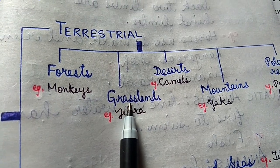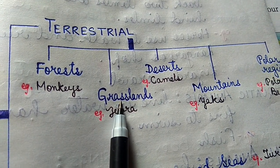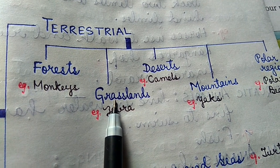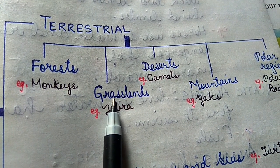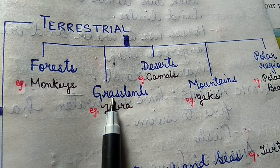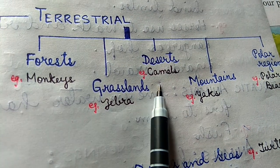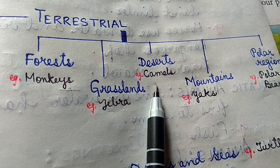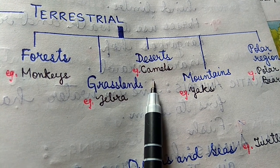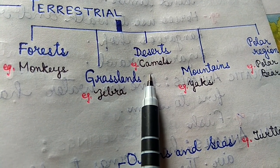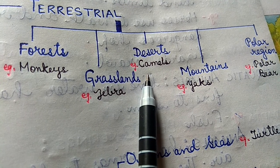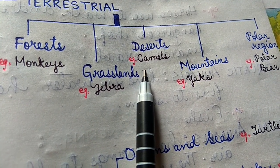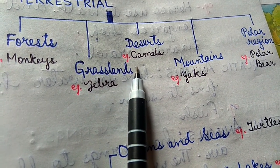Next, grasslands. Grasslands are wide stretches of areas having wild, dry and tall grasses. Examples: zebra, deer, and leopards live in grasslands. Next, deserts. Deserts are extremely hot and dry regions; they receive very little or no rain. Examples: camel, snakes, and desert rats live there.